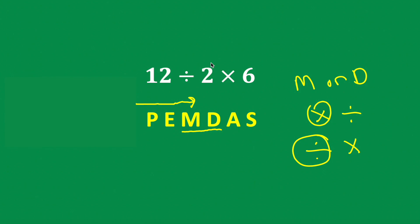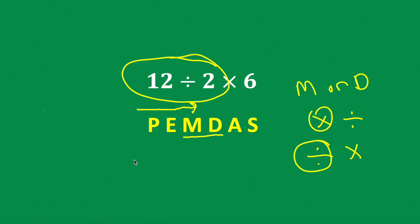So in particular, for this problem, we must do the division first. That is, we first take 12 divided by 2, and we'll get 6. And then finally take 6 times 6, and we'll get 36.